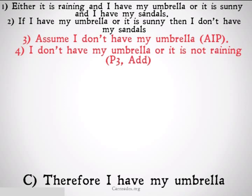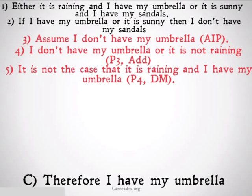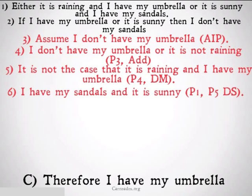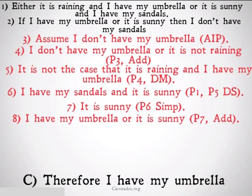I don't have my umbrella and it's not raining — that's just premise three addition. I'm going to do that so that I can conclude: it is not the case that it is raining and I have my umbrella. That's by DeMorgan's Law, which allows me to, with disjunctive syllogism, get line five: I have my sandals and it is sunny. Therefore, it's sunny — simplifying line six.